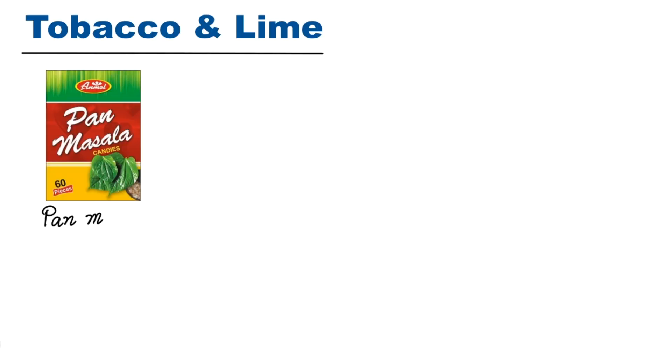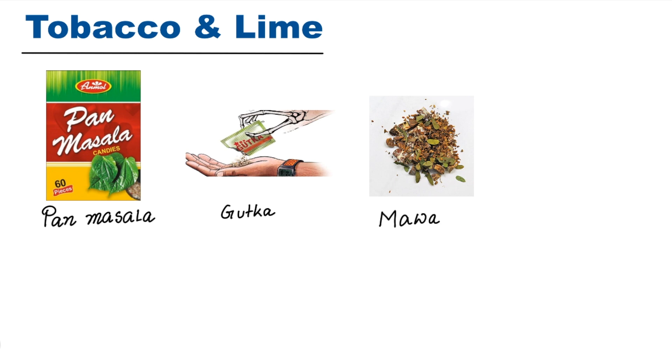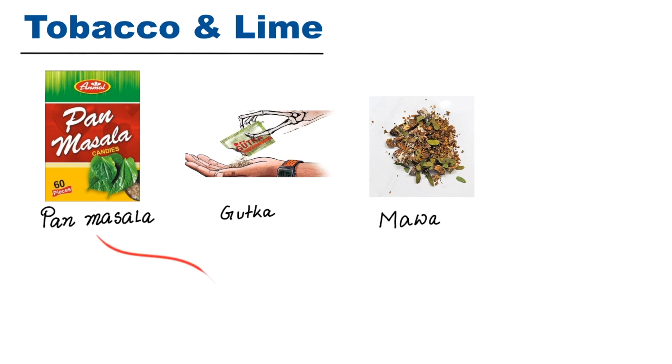Freeze dried products such as pan masala, gutka, and mawa have higher concentrations of arecanut per chew and appear to cause oral submucous fibrosis more rapidly than self-prepared conventional betel quid which contains a smaller amount of arecanut.